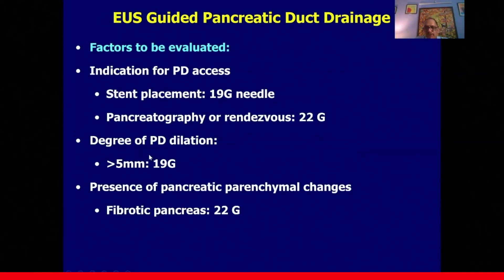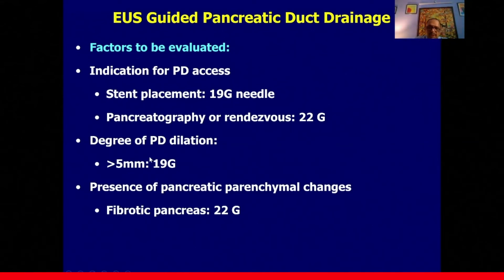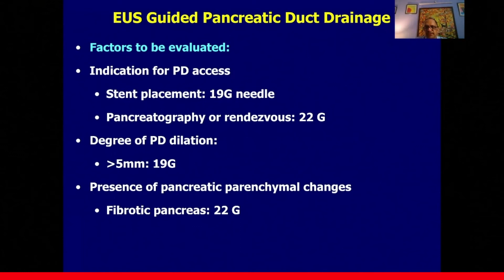To summarize the pre-procedure evaluation: first, assess the indication — if the goal is stent placement, use a 19-gauge needle for a stiffer wire; if the aim is pancreatography or a rendezvous, a 22-gauge needle suffices. Second, assess the degree of main pancreatic duct dilatation — more than 4-5 mm supports use of a 19-gauge needle, while a non-dilated duct requires a 22-gauge needle with thinner guide wires. If there is significant pancreatic fibrosis, use a 22-gauge needle, as puncturing a stiff pancreas with a 19-gauge needle is very difficult.